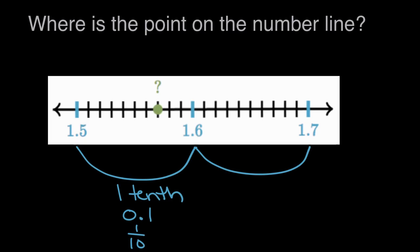So from here to here is 1 tenth, and within that tenth there are 1, 2, 3, 4, 5, 6, 7, 8, 9, 10 equal spaces.